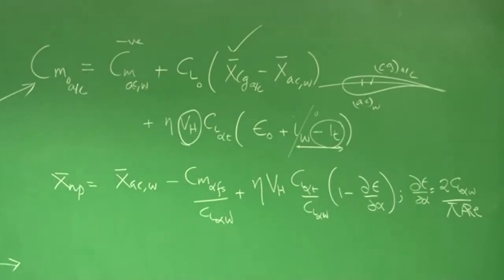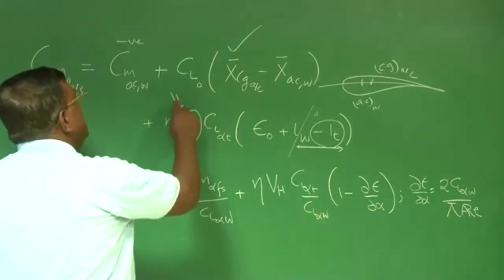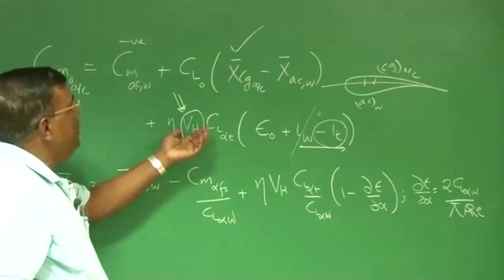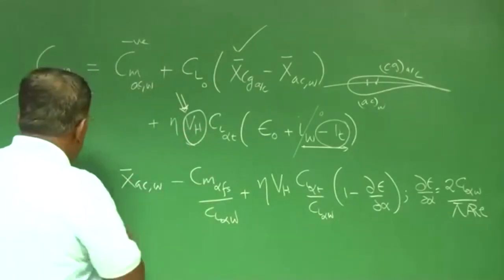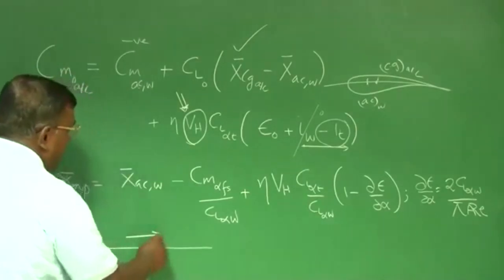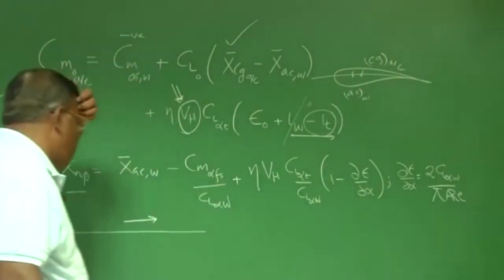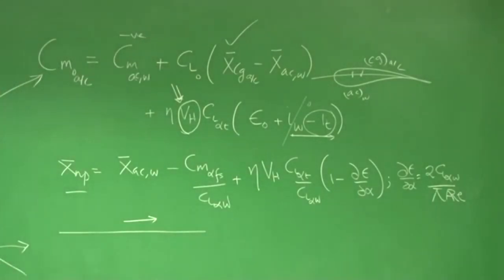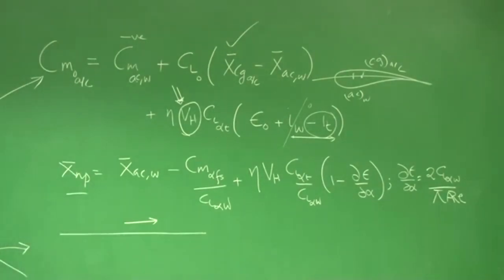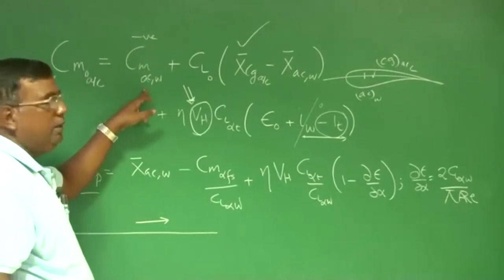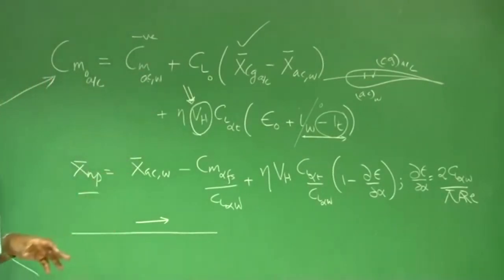To enhance the tail's contribution, the tail volume ratio VH plays an important role. That is why for a designer, he operates through tail volume. The first question is: how much tail volume should I take? The moment you increase the tail volume ratio, the neutral point moves backward and the aircraft becomes more and more stable, because VH appears in that expression. Before going to historical data, let us also see — once I write this expression, CM_naught of the aircraft includes CM_AC of the wing. Do I know it during conceptual design? Yes, because at some stage we have chosen an aerofoil.